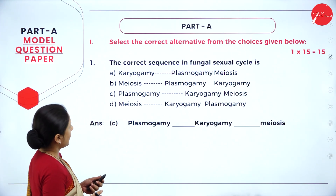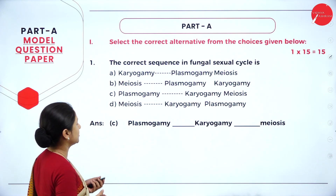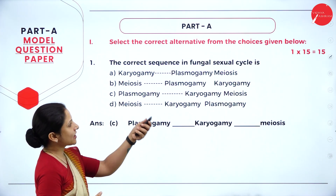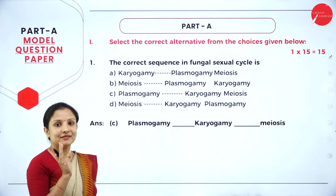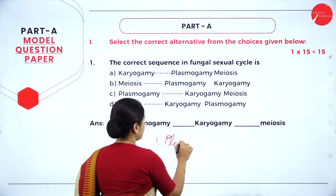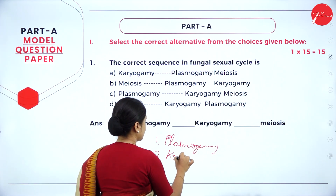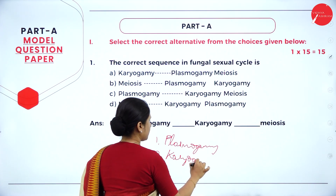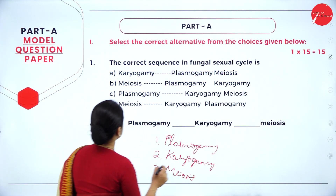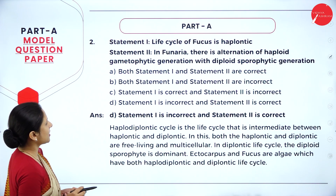Part A first main: select the correct alternative from the choices given — 15 MCQ questions, each carrying 1 mark. Question 1: The correct sequence in the fungal sexual cycle. There are 3 steps: first plasmogamy, then karyogamy (fusion of nuclei), and then meiosis occurs. Therefore option C — plasmogamy, karyogamy, meiosis — is the right answer.